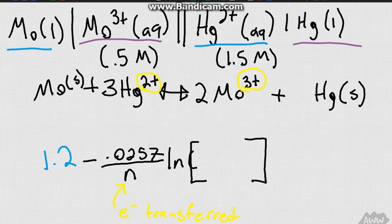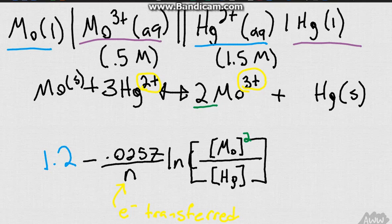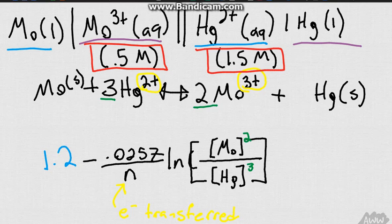So when we put in our products over reactants, we're going to get Mo. And what does this number 2 do? It makes it a power of 2. And so that's going to be then divided over the reactants. Which is going to be Hg. And what does that number 3 do? That makes it a cubed number. So obviously we will then plug in our concentrations. Which are given right here as 0.5 and 1.5. So we would plug those in. And that would be how we solve our problem.